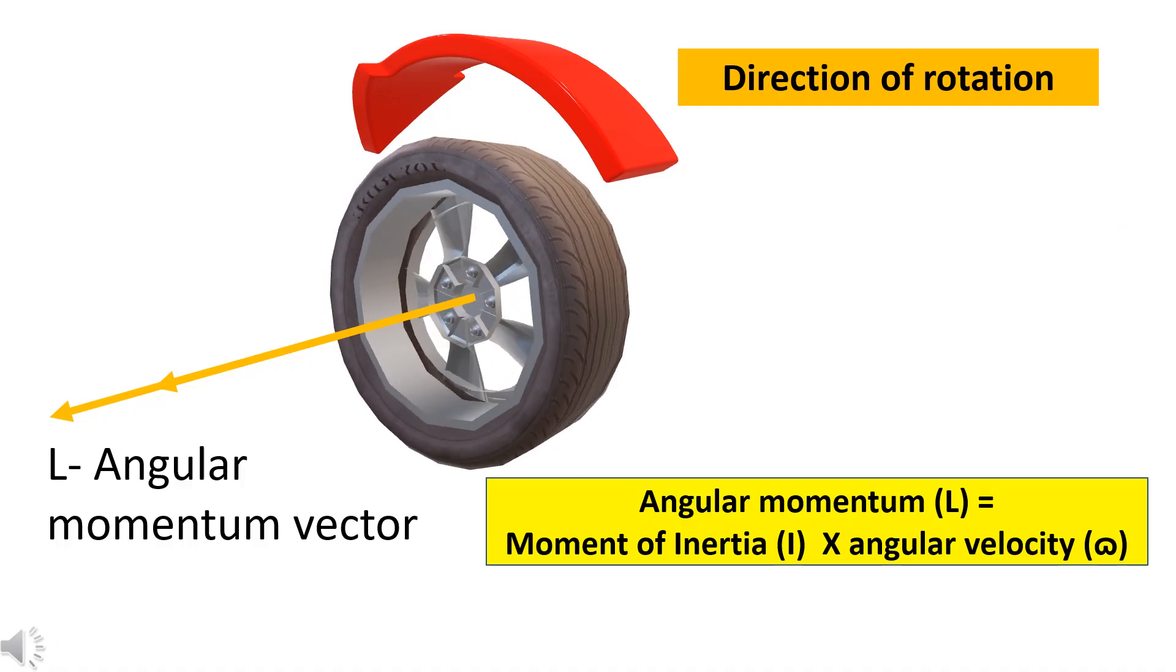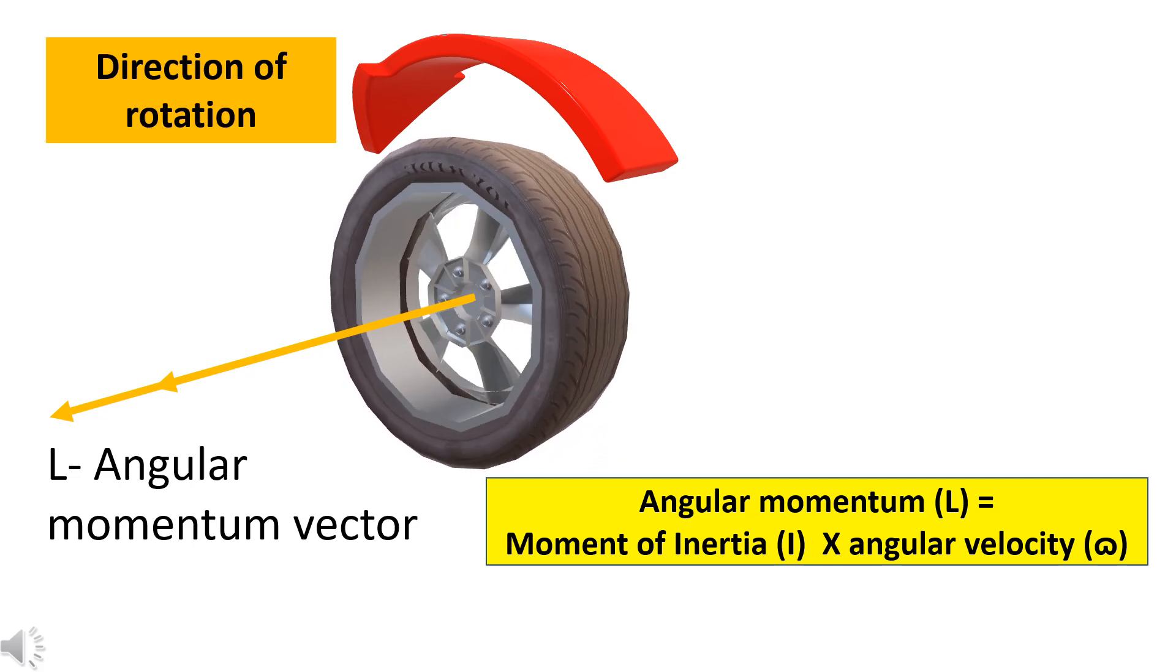Consider a rotating wheel. The wheel has angular momentum. The angular momentum is given by the product of moment of inertia of the body about the spinning axis and the angular velocity of the body. Angular momentum is a vector.